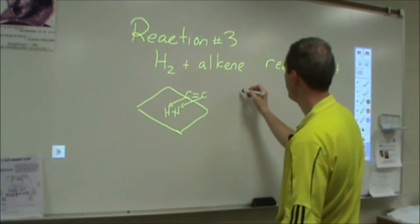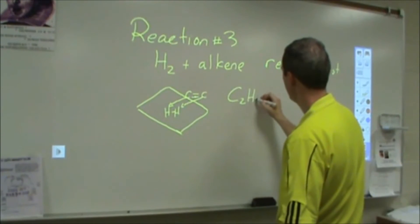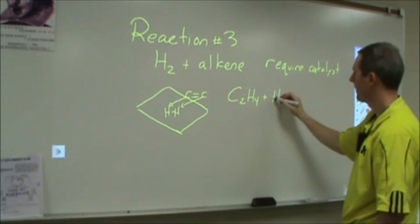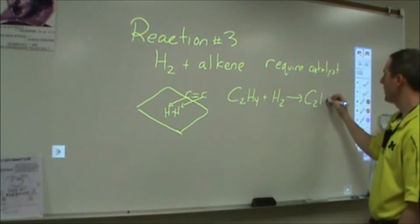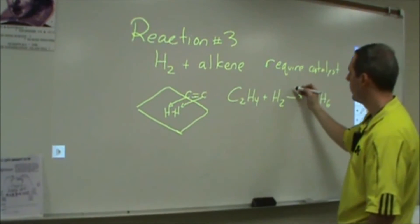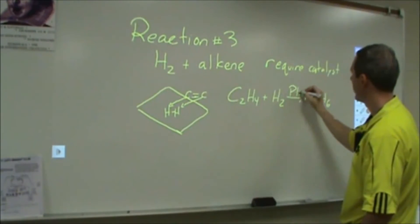Alkene plus hydrogen, examples are pretty simple. But if I had something really simple like ethene and hydrogen, all it's going to do is the hydrogen is going to add to this and form C2H6. You would need some type of catalyst, let's put some platinum there.